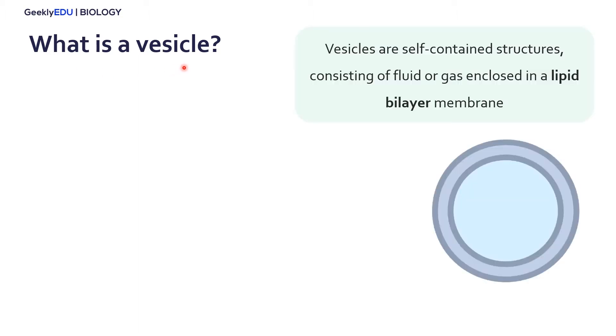The first question we have to ask ourselves when talking about vesicular transport is: what is a vesicle? A vesicle is basically any self-contained structure holding a fluid or a gas within a lipid bilayer membrane.